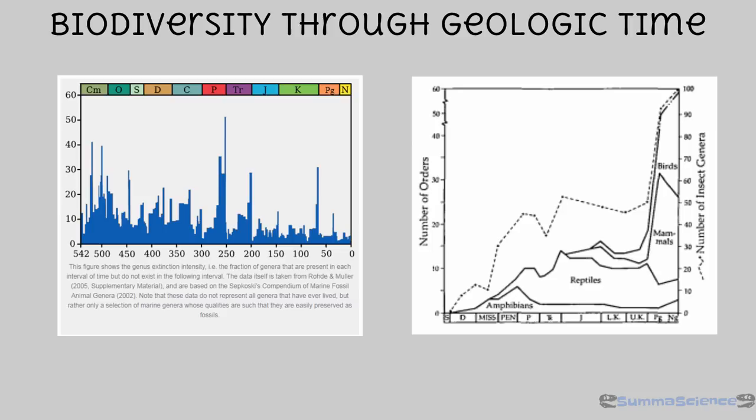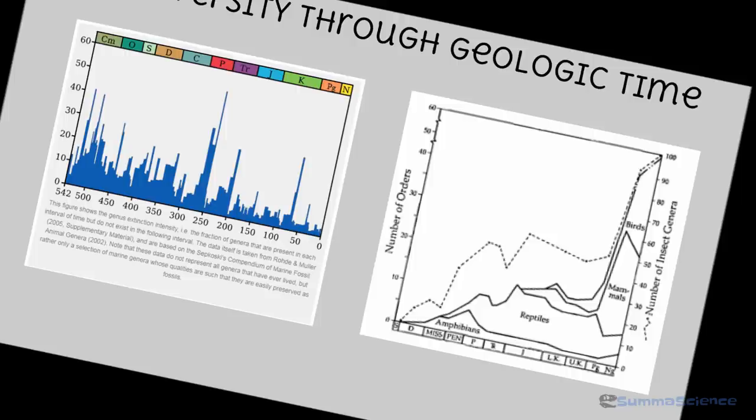The charts on this slide show the rise and fall of different types of life throughout geologic time. One of the big takeaways from studying these mass extinctions is that life which arose after each extinction event was better suited to survive the conditions of that time, and all of those species found their own niche. Life overall is persistent, resilient, and adaptable.